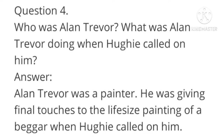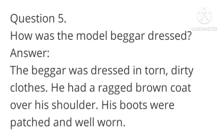Question number 4: Who was Alan Trevor? What was Alan Trevor doing when Huey called on him? Answer: Alan Trevor was a painter. He was giving final touches to the life-size painting of a beggar when Huey called on him. Question number 5: How was the model beggar dressed? Answer: The beggar was dressed in torn, dirty clothes. He had a ragged brown coat over his shoulder. His boots were patched and worn.